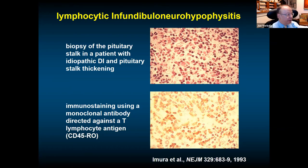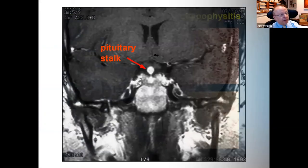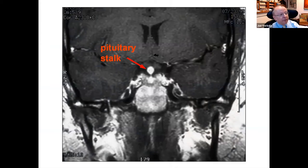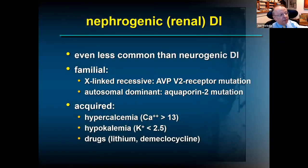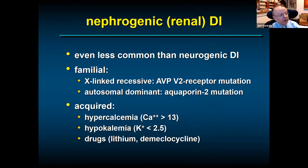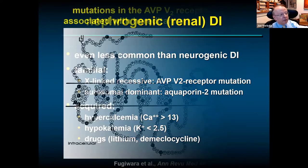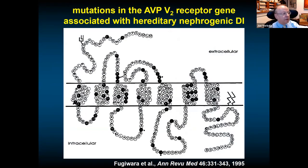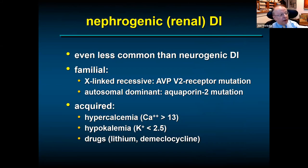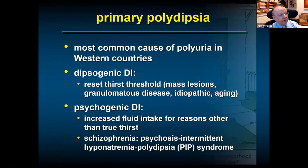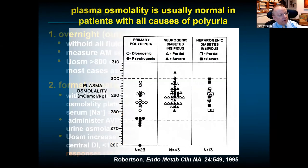Idiopathic DI is in fact autoimmune: a seminal 1993 Japanese study biopsied a thickened pituitary stalk and found T lymphocyte infiltration, identifying lymphocytic infundibuloneurohypophysitis (LIN) — autoimmune destruction of the AVP-producing neurons. Acquired nephrogenic DI is caused by severe hypercalcemia (>13 mg/dL), severe hypokalemia, or lithium — even at therapeutic levels. Familial nephrogenic DI is X-linked recessive due to V2 receptor mutations, so it occurs in males.